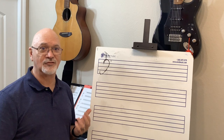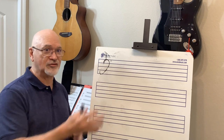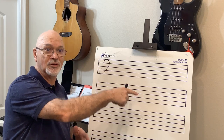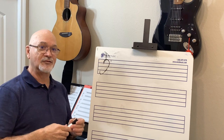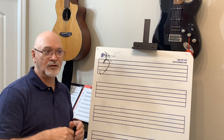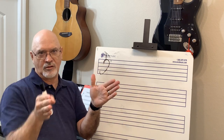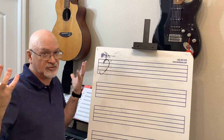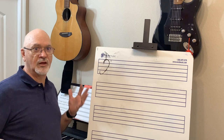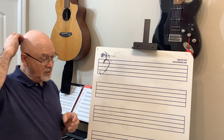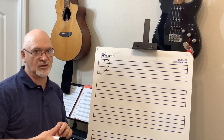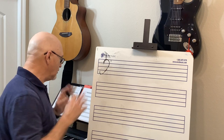Even when we get into triads, we borrow triads. In a minor key, you'll see a borrowed five chord — we take the five chord from the major and put it into the minor. That's why we have three different forms of the minor scale. Major keys don't have variations like that; minor keys do. But we'll get into that later.